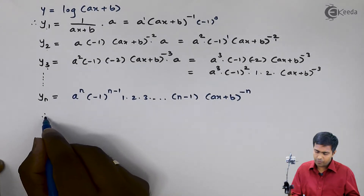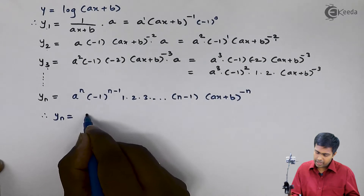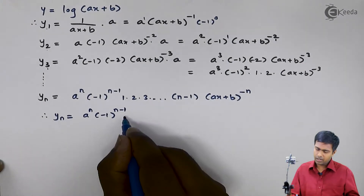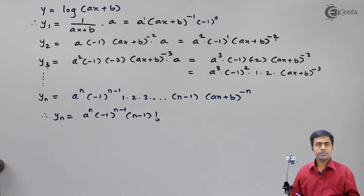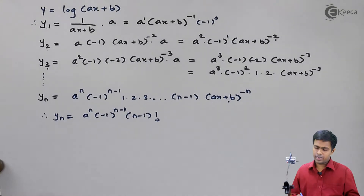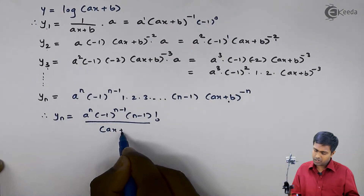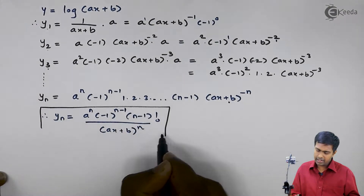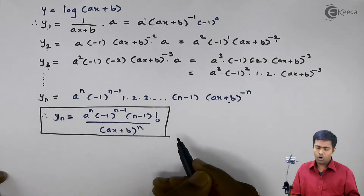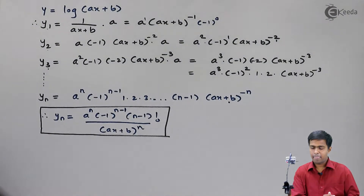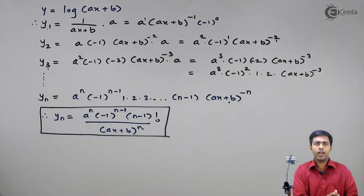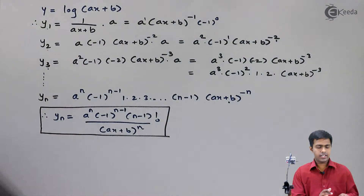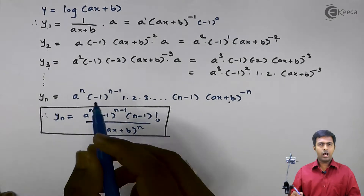Now let us rewrite this. Therefore, yn will become a raised to n, (minus 1) raised to (n minus 1). This term — 1 into 2 into 3 up to (n minus 1) — is nothing but the factorial of (n minus 1), and this will go in the denominator, and this will become (ax plus b) raised to n. And this is the formula for the nth derivative of log(ax plus b). This formula is very useful to find out the nth derivative of a logarithmic function, and we will see more examples where we will apply the formula.